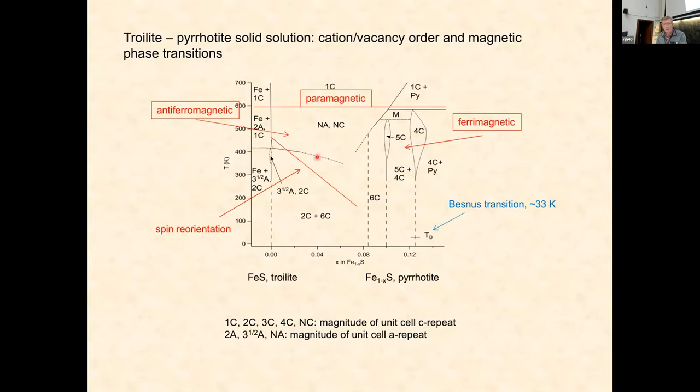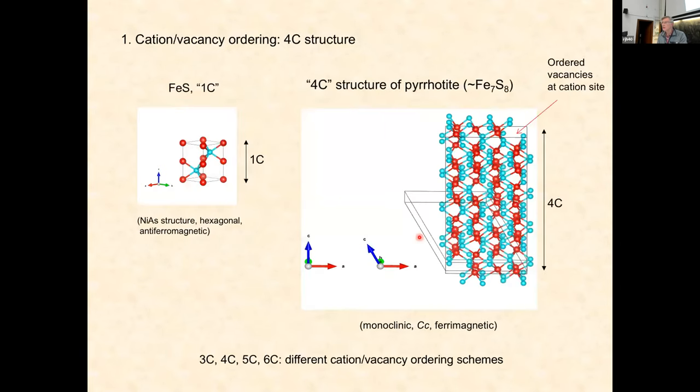Superimposed on that you've got magnetic transitions: paramagnetic above 590K, antiferromagnetic on the left-hand side and ferrimagnetic on the right-hand side, and there's this spin-flop transition which I'm going to talk about quite a bit in FeS, and of course in pyrrhotite there's also the Besnus transition at 33 kelvin.